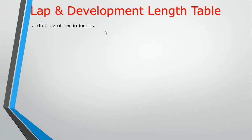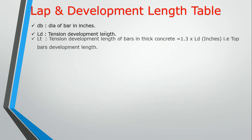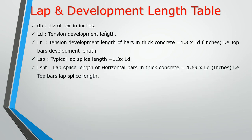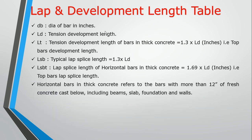Let's look at the abbreviations table. DB is diameter of bars in inches. LT is the tension development length of bars in thick concrete, where thickness is more than 12 inches — and LT equals 1.3 times LD. LSB is typical lap splice length, which is 1.3 times LD. LSBT is the top bar lap splice in thick concrete, equal to 1.69 times LD. The top bar lap splice length applies to horizontal bars in thick concrete. This includes beams, slabs, foundations, and walls.